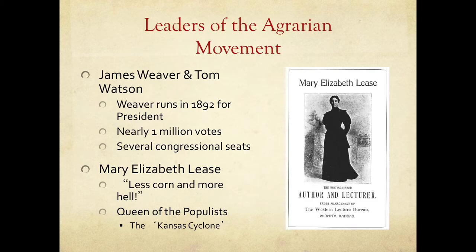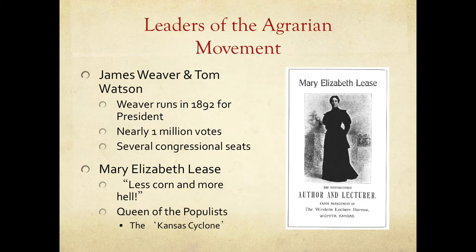Perhaps one of the most famous leaders was Mary Elizabeth Lease, known as the Kansas Cyclone. She was an author, lecturer, activist, and suffragette who took up the populist cause. A quote often attributed to her — though some historians question it — is 'Less corn and more hell.' She was calling on farmers to stop growing food, forcing capitalists and politicians to come to their knees. Mary Elizabeth Lease was definitely a woman ahead of her time.